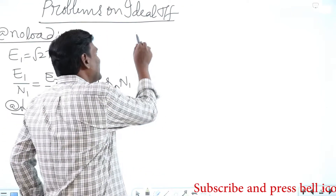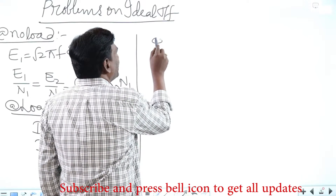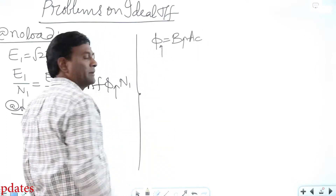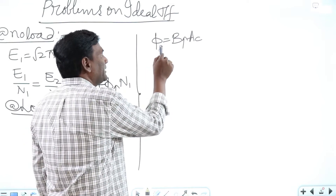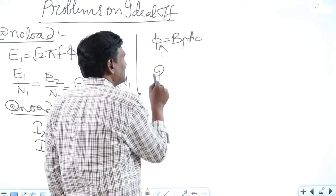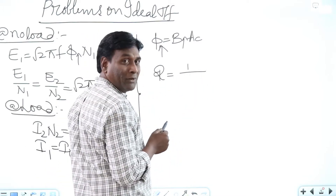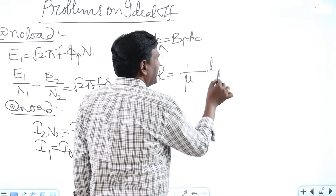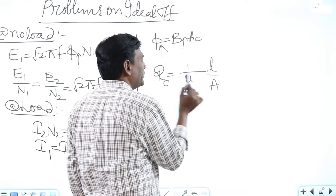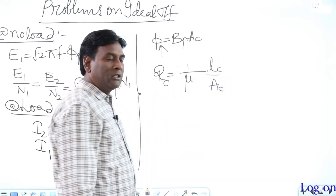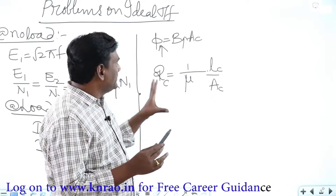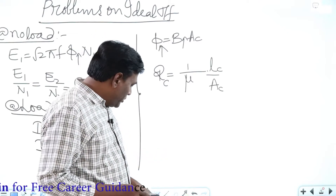From the magnetic circuit point of view, the operating flux equals flux density times the area of cross-section of the core: Φ_max = B_max × Ac. Reluctance equals (1/μ) × (l/A), which is the length of the flux path divided by the area of cross-section of the flux path.